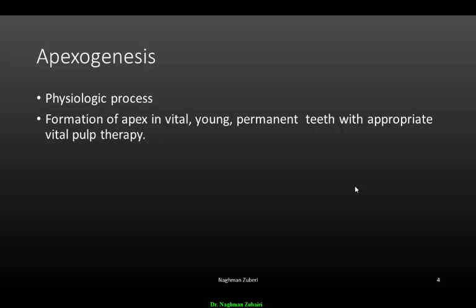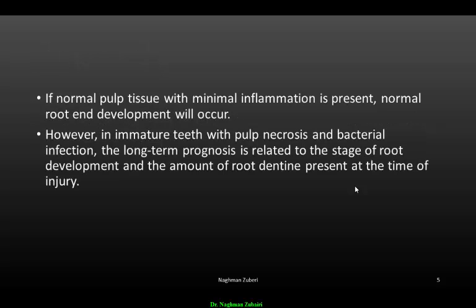Apexogenesis is a physiologic process of apex formation in vital young permanent teeth with appropriate vital pulp therapy — it is not associated with non-vital pulp therapy. If normal pulp tissue with minimal inflammation is present, normal root end development will occur. However, in immature teeth with pulp necrosis and bacterial infection, the long-term prognosis is related to the stage of root development and the amount of root dentine present at the time of injury.